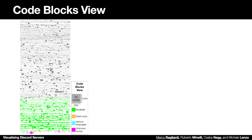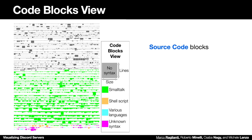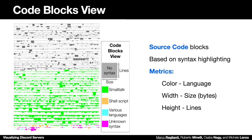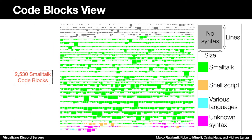We will present now the first of the two views related to source code. The code blocks view represents source code blocks as entities that are based on syntax highlighting, to map the language of the code to the color and the size of the snippet to width and height. In our case study, we found 2,500 Smalltalk code blocks shared between members of the community.